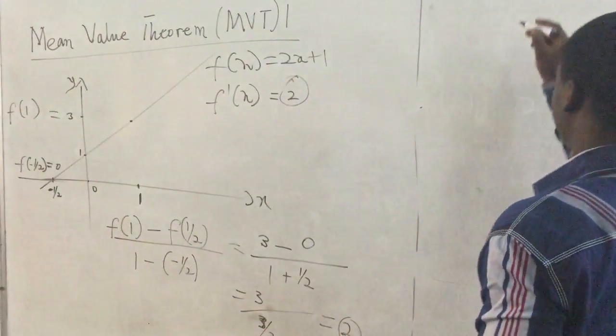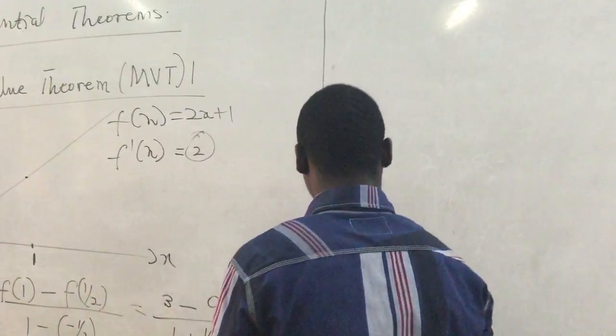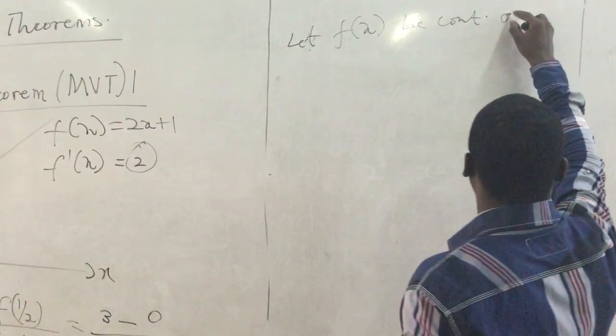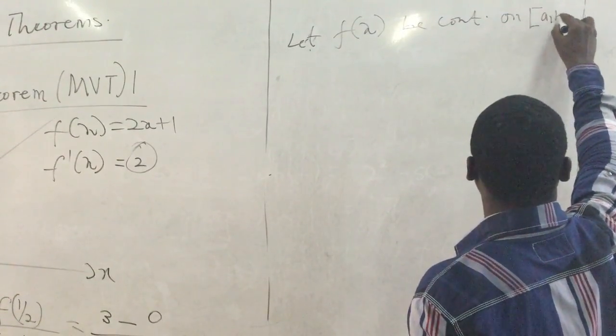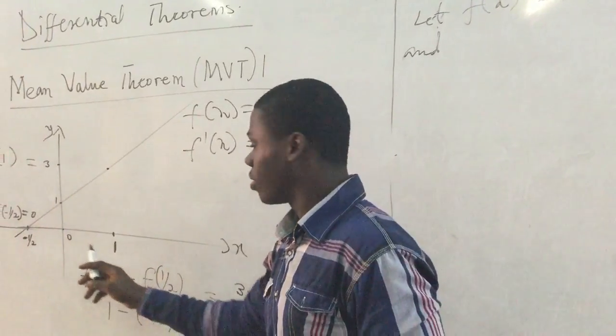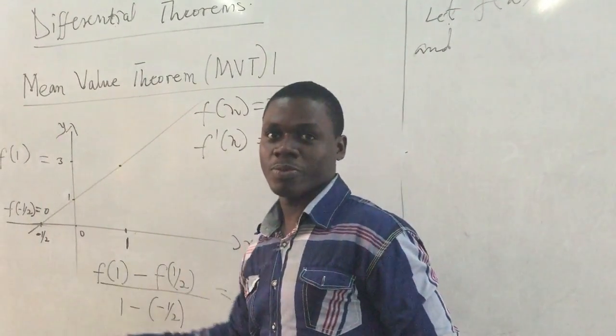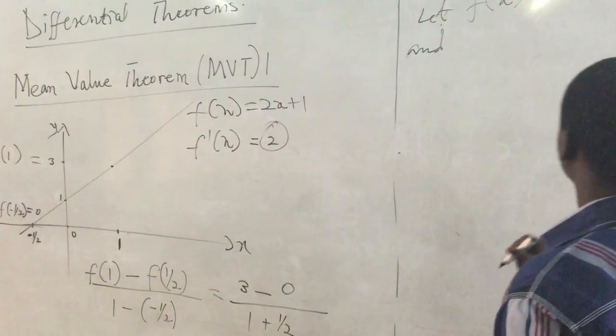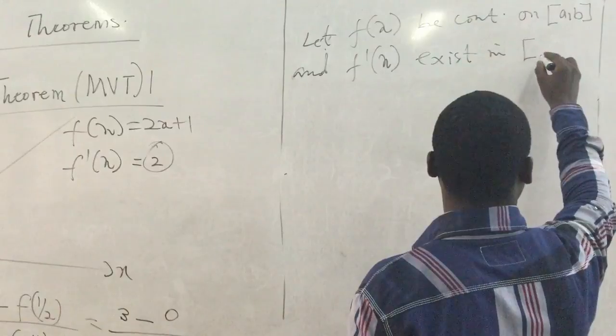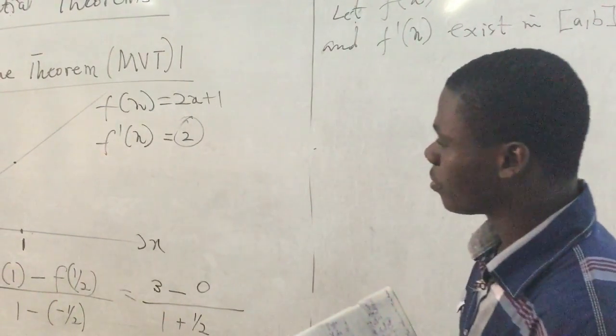Let f of x be continuous on a certain closed interval [a, b]. And yes, as we have, f of x is continuous. The interval we just created is a very small interval, this and that. So let the function be continuous on the closed interval [a, b] as we have just created. So by now you'll be realizing what we did here. And f prime of x exists in the open interval (a, b). The derivative of the function should exist within the interval. Now if that is the case.